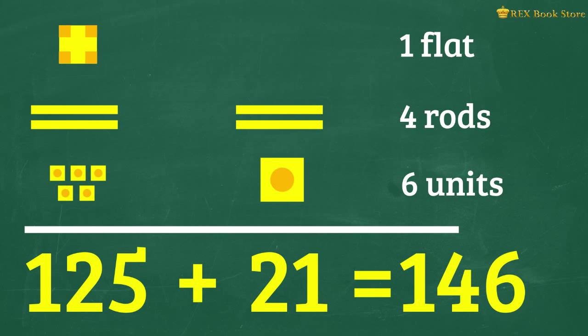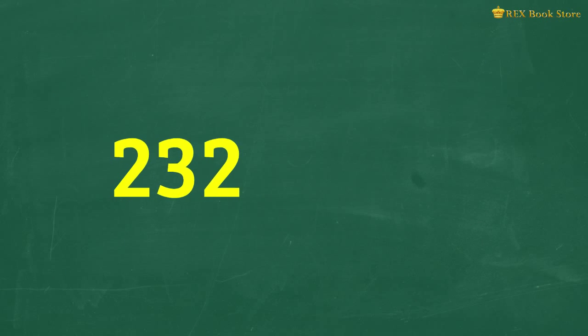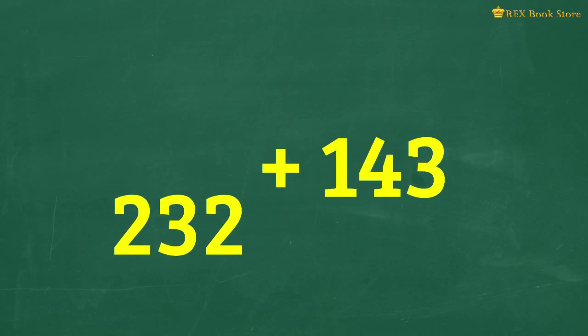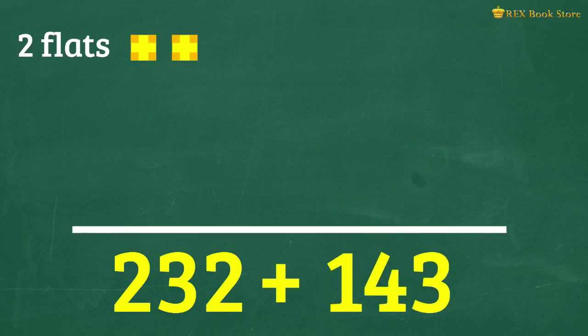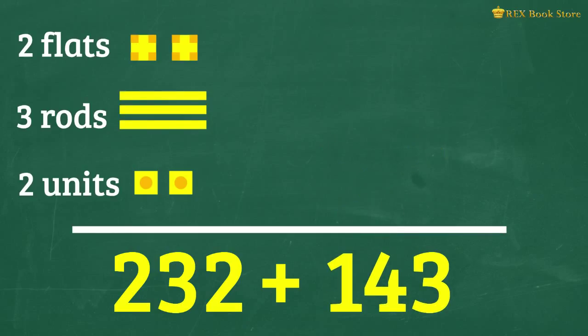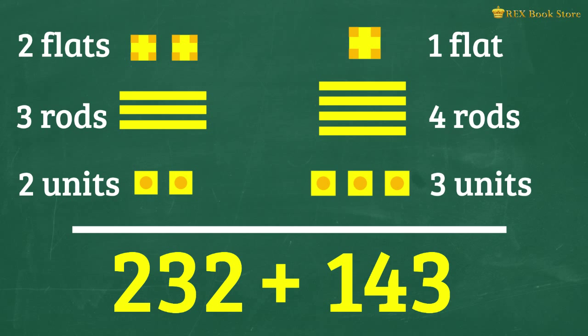Let's have another example. What is 232 plus 143? We model 232 using 2 flats, 3 rods and 2 units. For 143, we use 1 flat, 4 rods and 3 units.